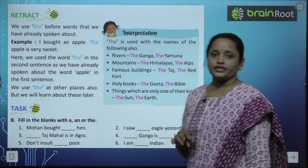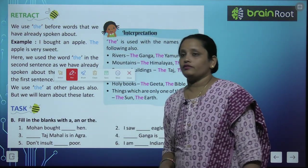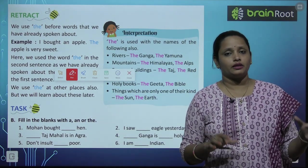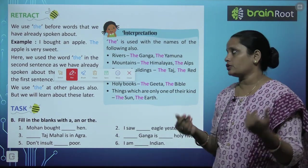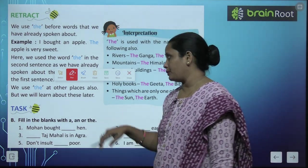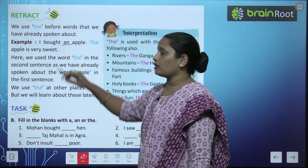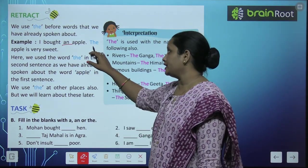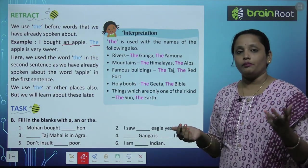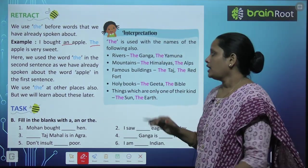Now let's learn about 'the' — yeh kab lagayenge. So we use 'the' before words that we have already spoken about. The tab lagate hain jab hum kisi aisi word ki baat kar rahe hon jisko hum pehle hi mention kar chuke hon. Example: 'I bought an apple' — phir 'The apple is very sweet.' Usi apple ki baat dusre sentence mein ho rahi hai, toh hum 'the apple' lagate hain.